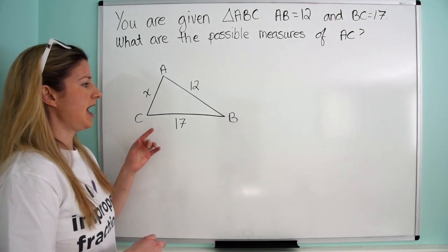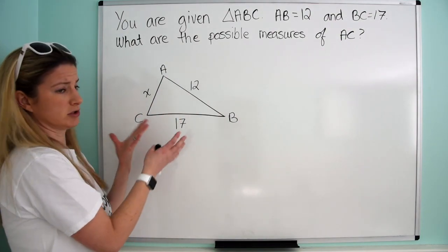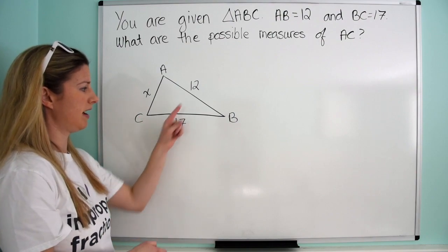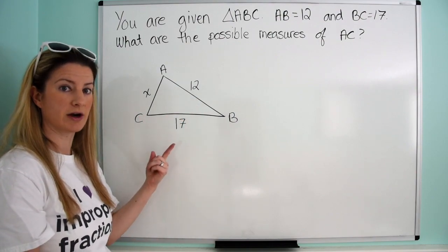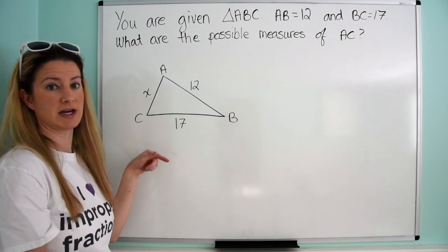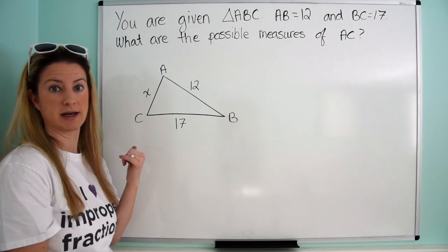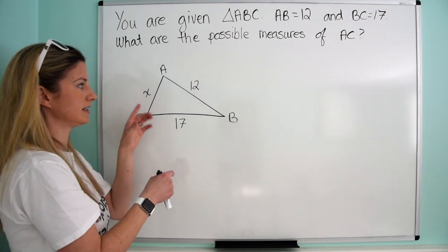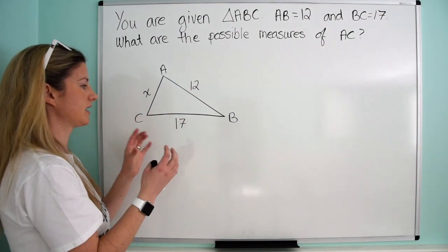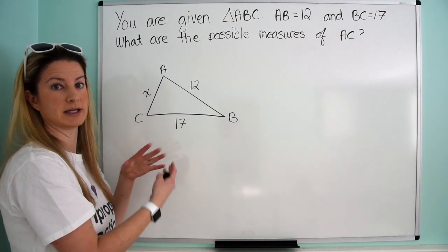The theorem states that a triangle has three sides, and the sum of the lengths of any two sides must be greater than the length of the third side. So when you add any two sides together, that number must be greater than the length of the remaining side.